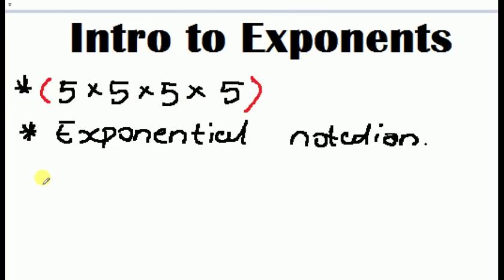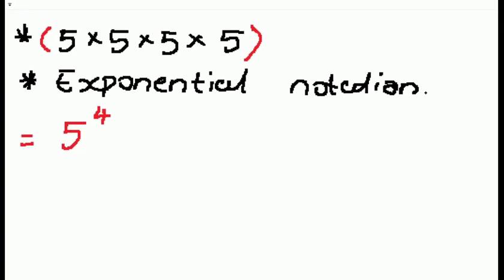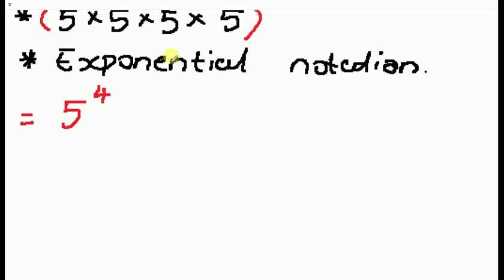If we are writing this in exponential notation, we write it as 5 to the power of 4. This just means that 5 was multiplied by itself 4 times.